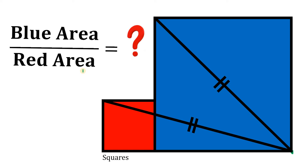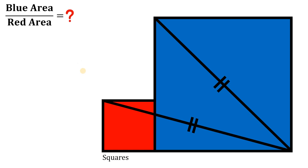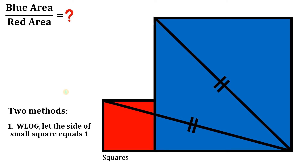Now let's see if you got the correct answer. To answer this kind of question, I will show you two different methods. The first one is, without loss of generality, let the side of the small square equal one. The second method is the general solution, letting the side of the big square be one variable and the side of the small square be another variable.